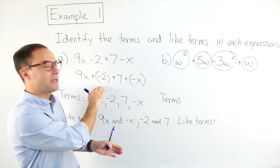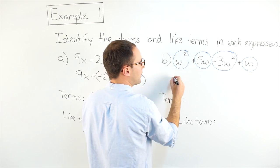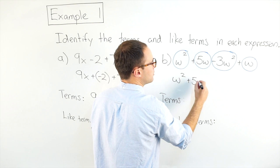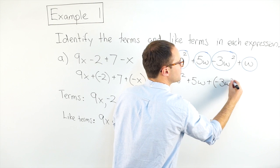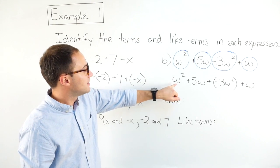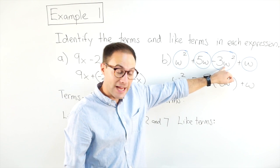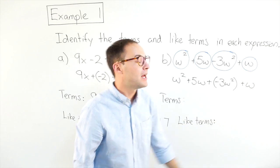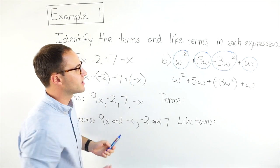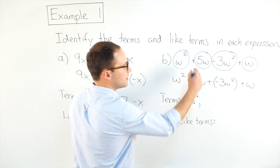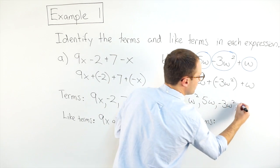This is similar to what we did before. If I change this expression to an addition expression, I'd get w squared plus five w plus negative three w squared plus w. My terms are: w squared, five w, negative three w squared, and w. A lot of students like to use this circling strategy, and if that works for you, great. So let's list our terms: w squared, five w, negative three w squared, and w.